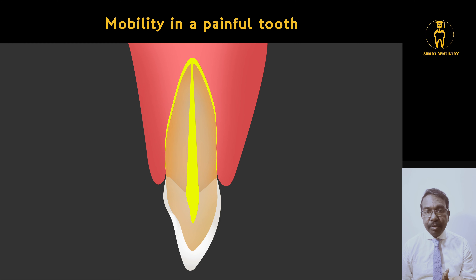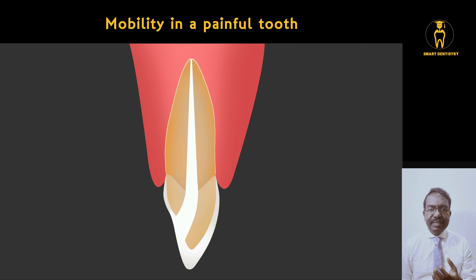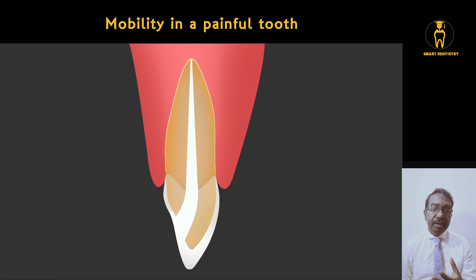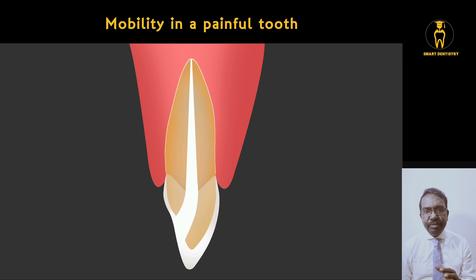That is the reason for a mobile tooth in a painful endodontically involved situation. Often dentists think the tooth has become mobile and consider extraction, but no — just prepare an access cavity. Once the access cavity is prepared, most often there will be drainage of pus — maybe one or two drops. Even if there is no drainage, symptoms will be relieved within a day or two and mobility disappears. A typical symptom is that this tooth contacts in occlusion first before any other teeth when the patient bites.